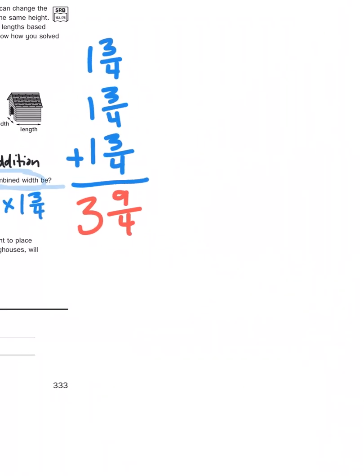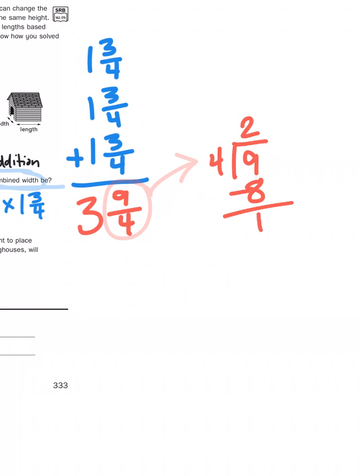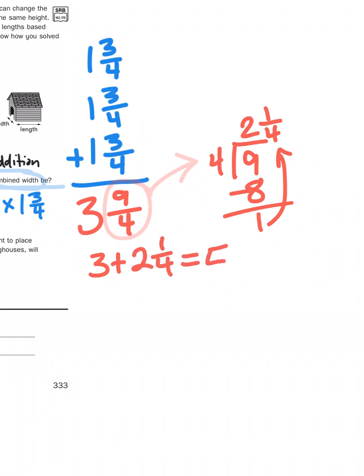This gives us the awkward number three and nine-fourths. That number can't stand because you can't make a mixed number with an improper fraction. So we're going to take nine-fourths and figure out how many groups of four we can get out of nine — divide nine by four. You can get two groups of four out of nine because two times four is eight, and that leaves a remainder of one, otherwise known as one-fourth. So three and nine-fourths is the same as three and two-and-a-fourth, which gives us five and one-fourth.